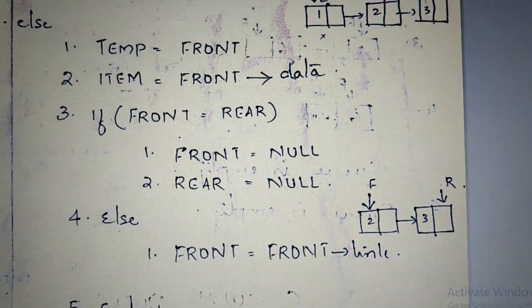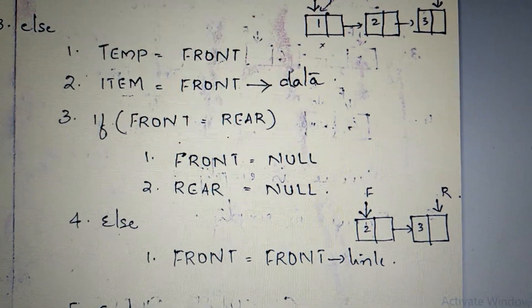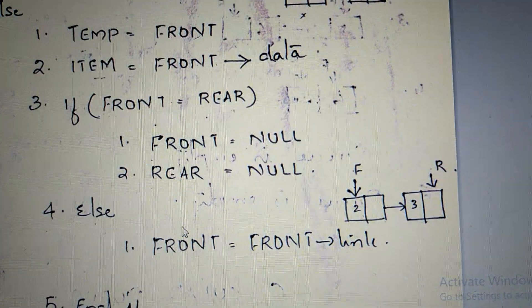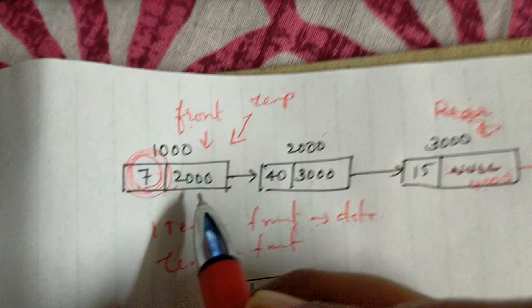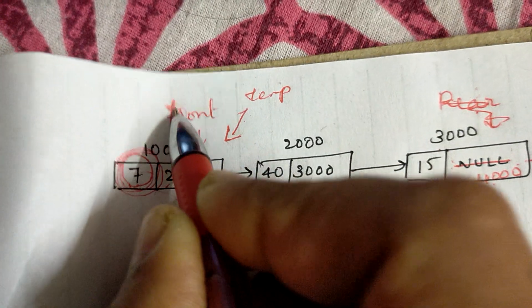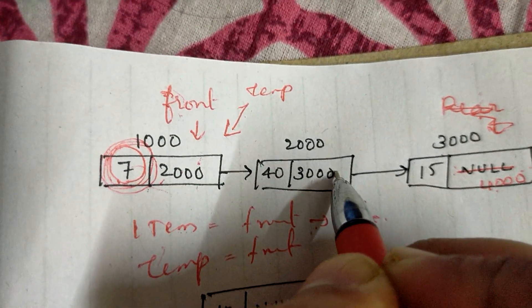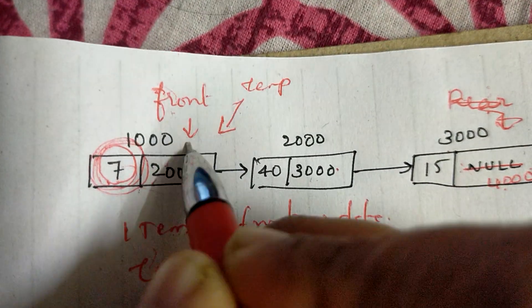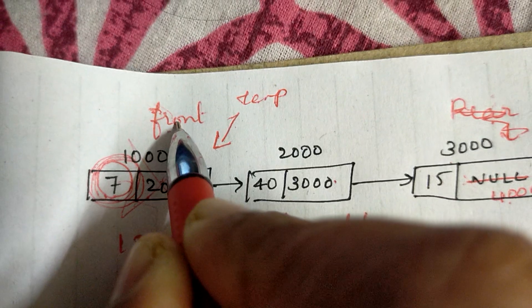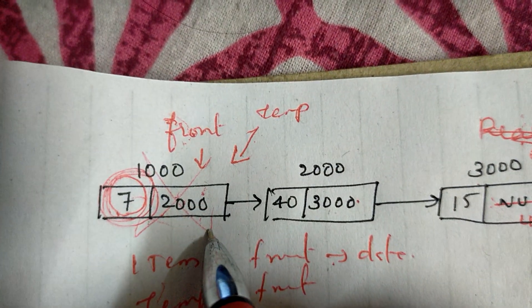Now we will do the else part. We will delete the front node. We will process the next node in the case — we will delete the next node. If we are going to delete the front, we will delete the current front node, which is the first node.